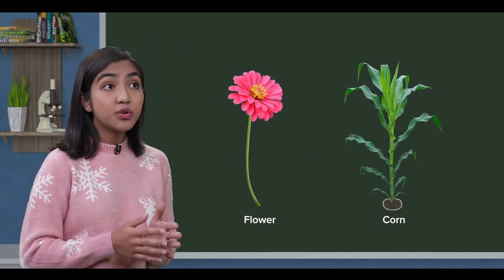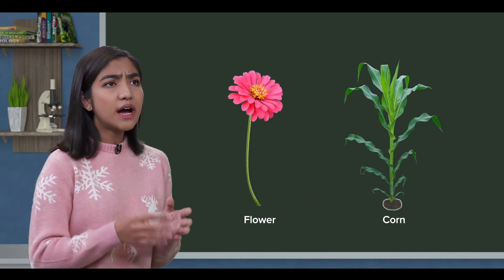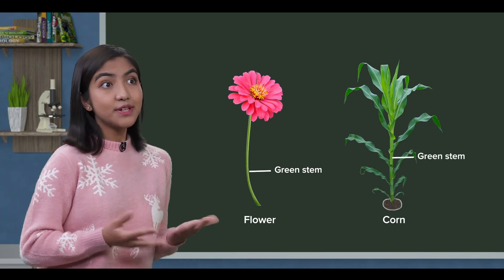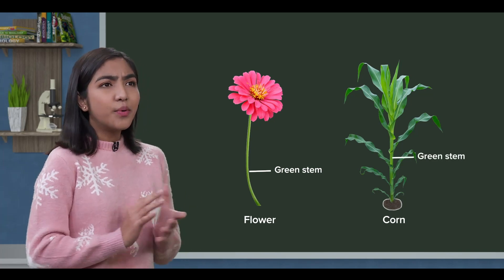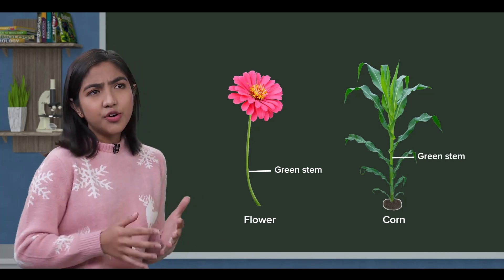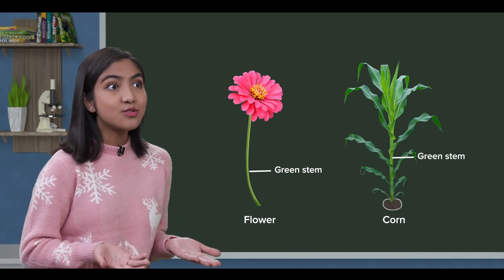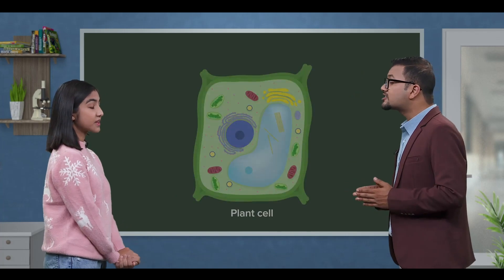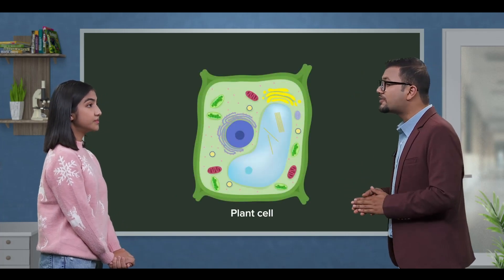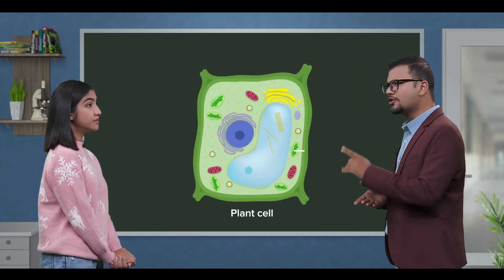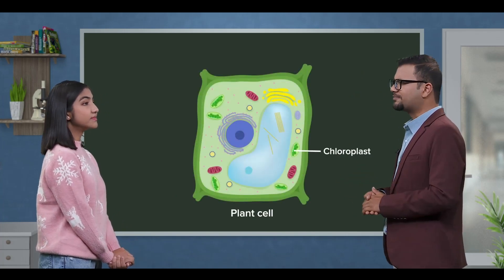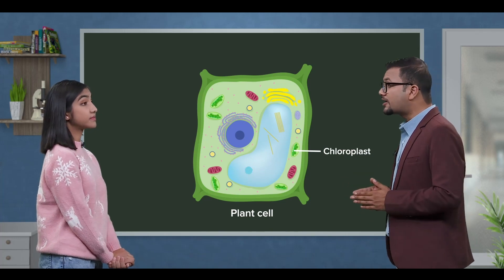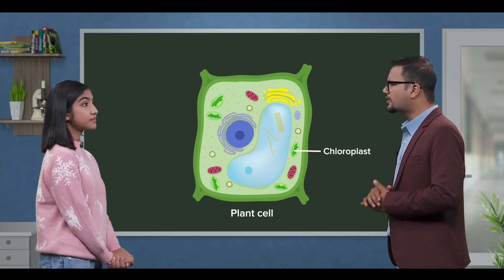There is a flower stem in the leaves, and chloroplasts are present in all green cells. Chloroplasts are important because of what they do.